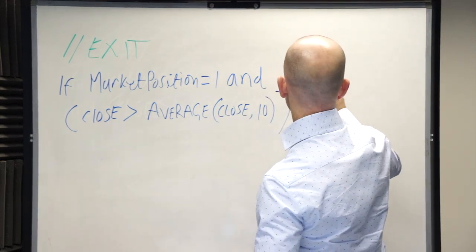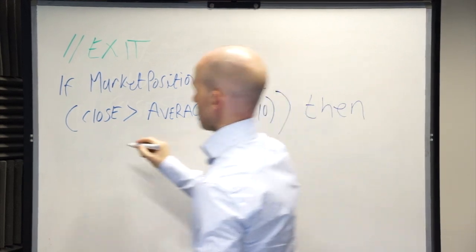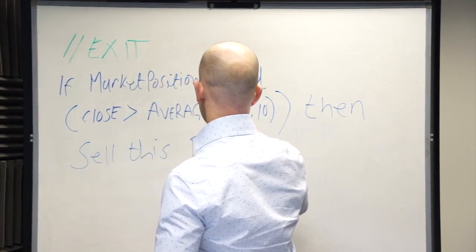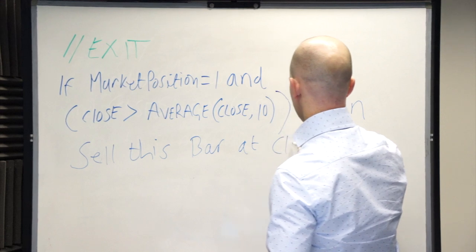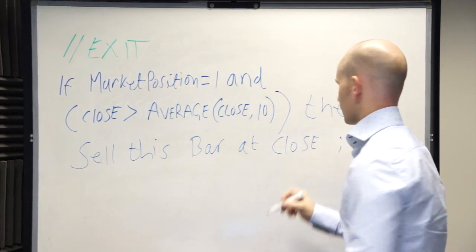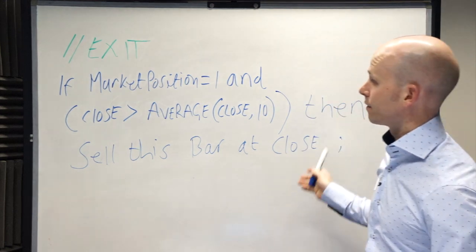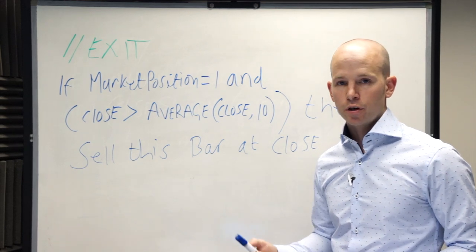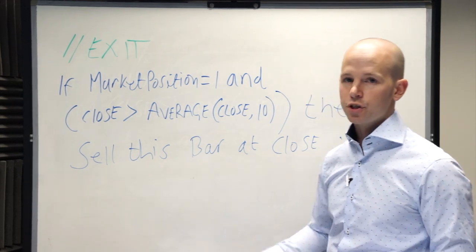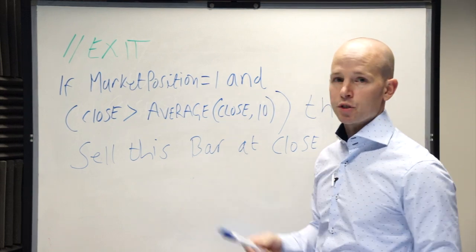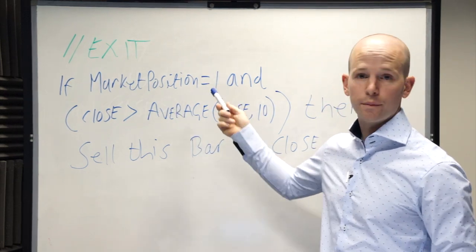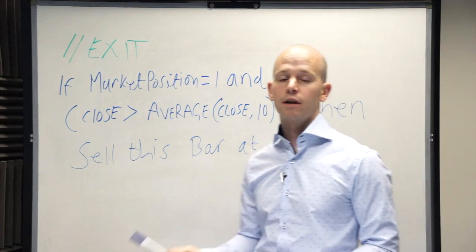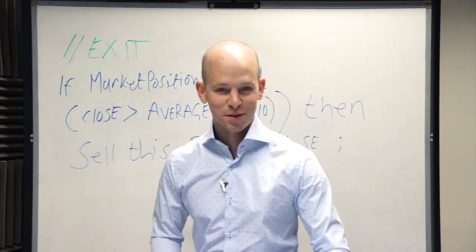Then, sell this bar, sell this bar at close, semi-colon. And that's it. One less condition to the entry. With the entry, we were looking for wanting to be above the 200 period moving average and the RSI to drop. The exit, much simpler. Once we're in a long trade, number one, and the close is above the 10 period moving average, sell this bar at the close. And that's it. That's about as simple as I can make it.